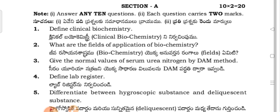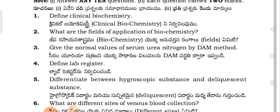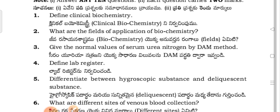Section A. Question 1: Define Clinical Biochemistry. Question 2: What are the fields of application of Biochemistry? Question 3: Give the normal values of serum urea nitrogen by the diacetyl monoxime method.